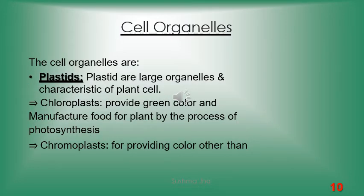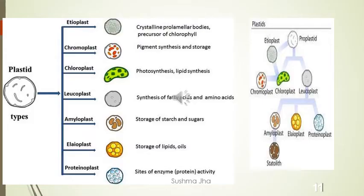Cell organelles are small portions of the cell responsible for performing different functions. The first cell organelle is plastids, which are only present in plant cells and absent in animal cells. Types include chloroplasts and chromoplasts. Chloroplasts contain chlorophyll — the green color pigment responsible for the process of photosynthesis. Chromoplasts give plants colors other than green, such as red or blue. An example is croton.